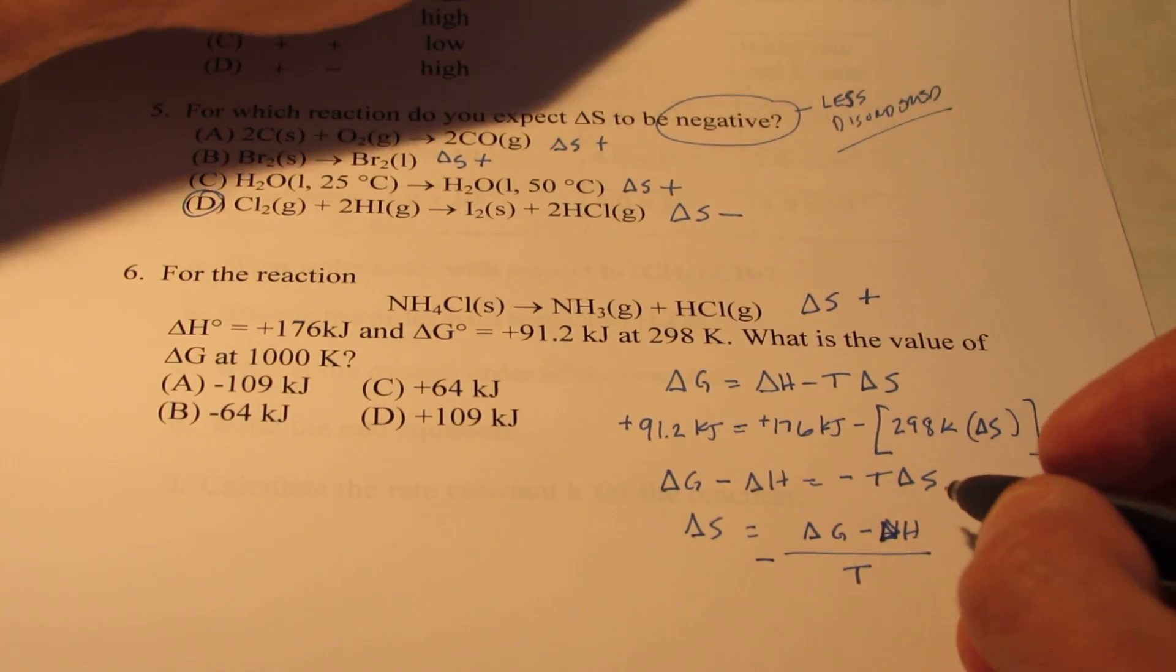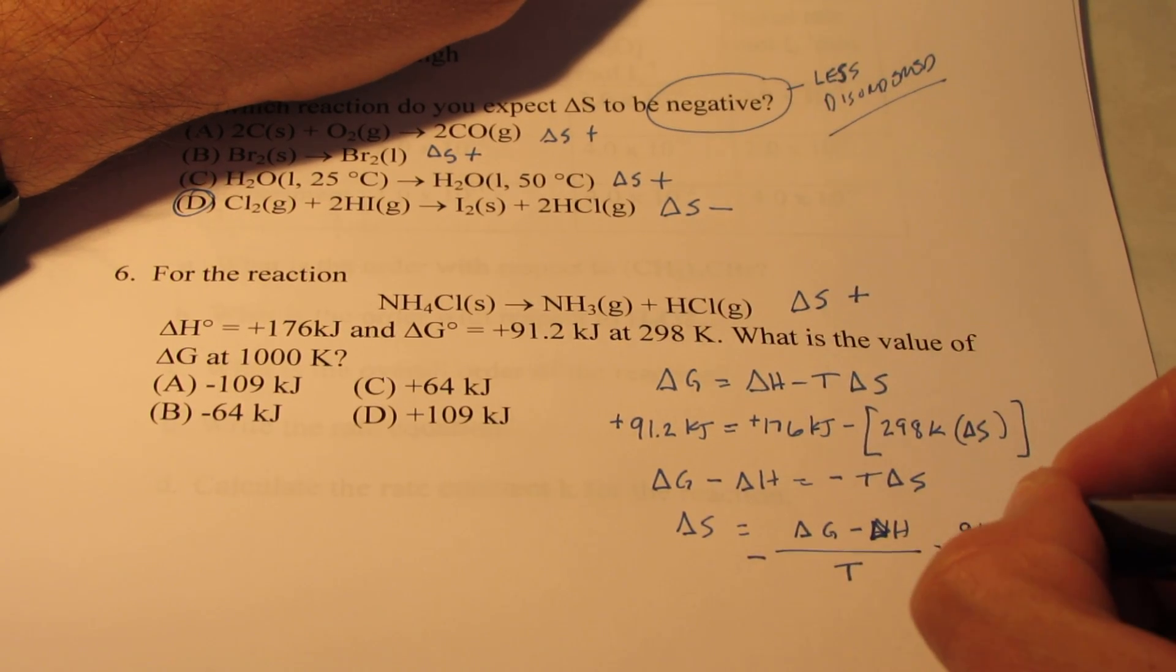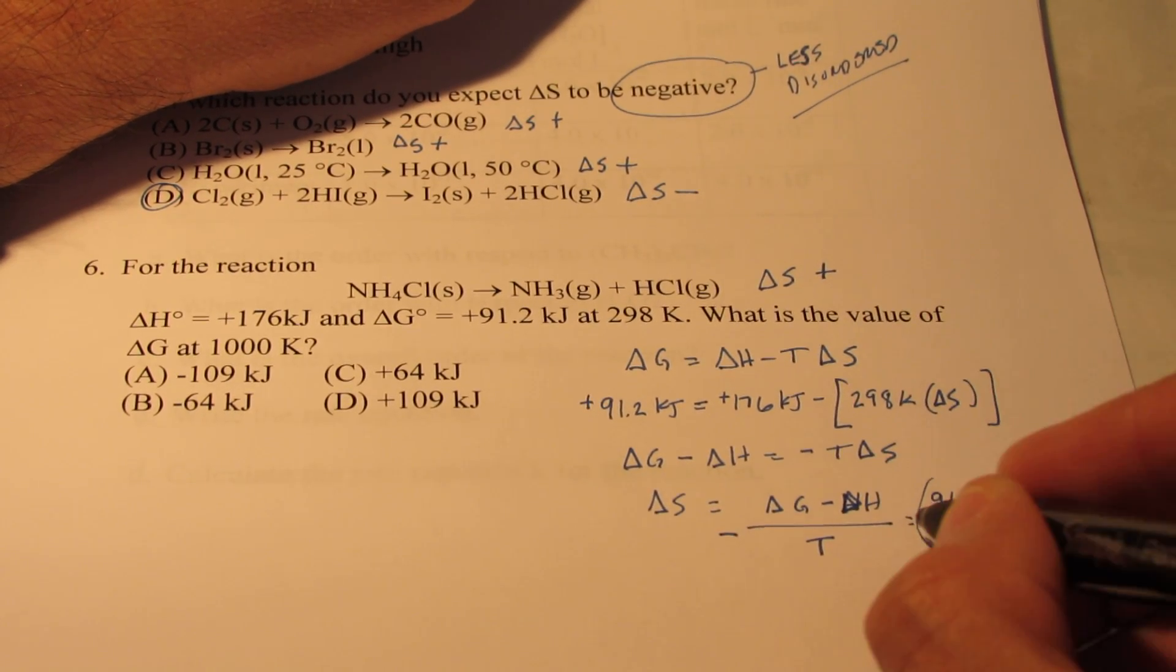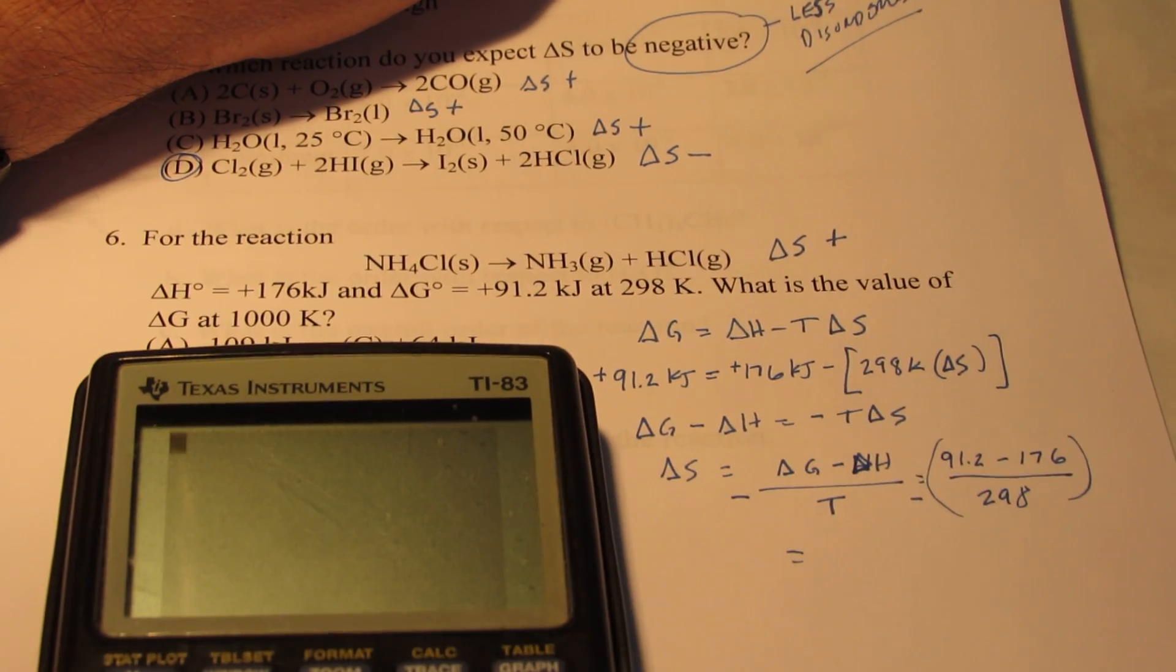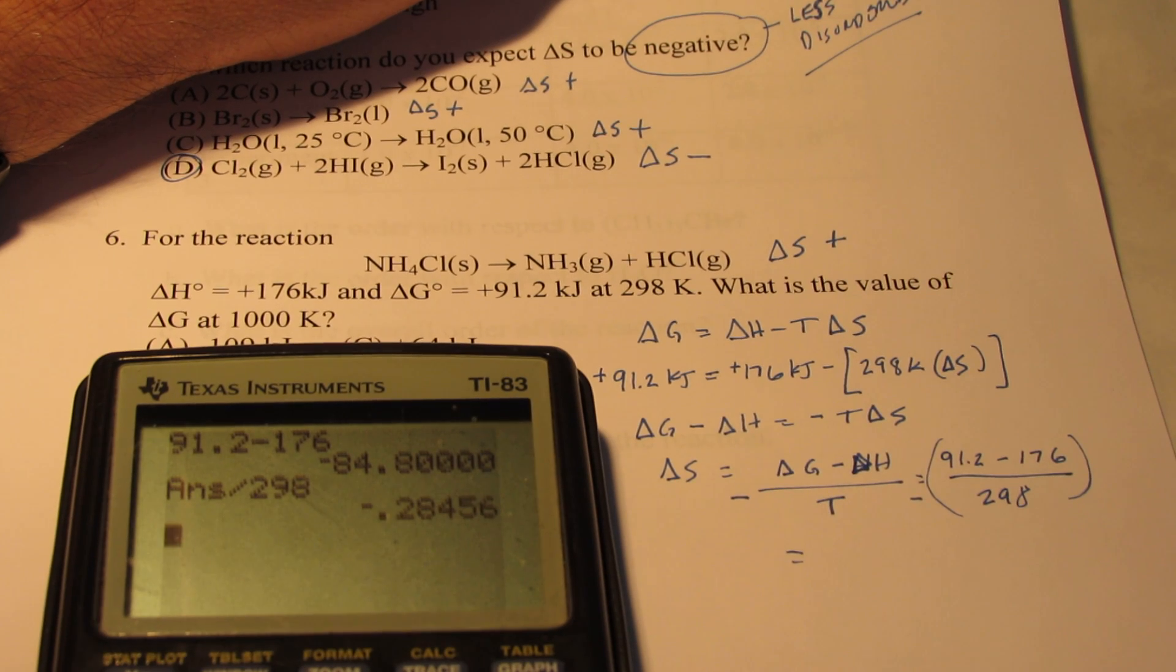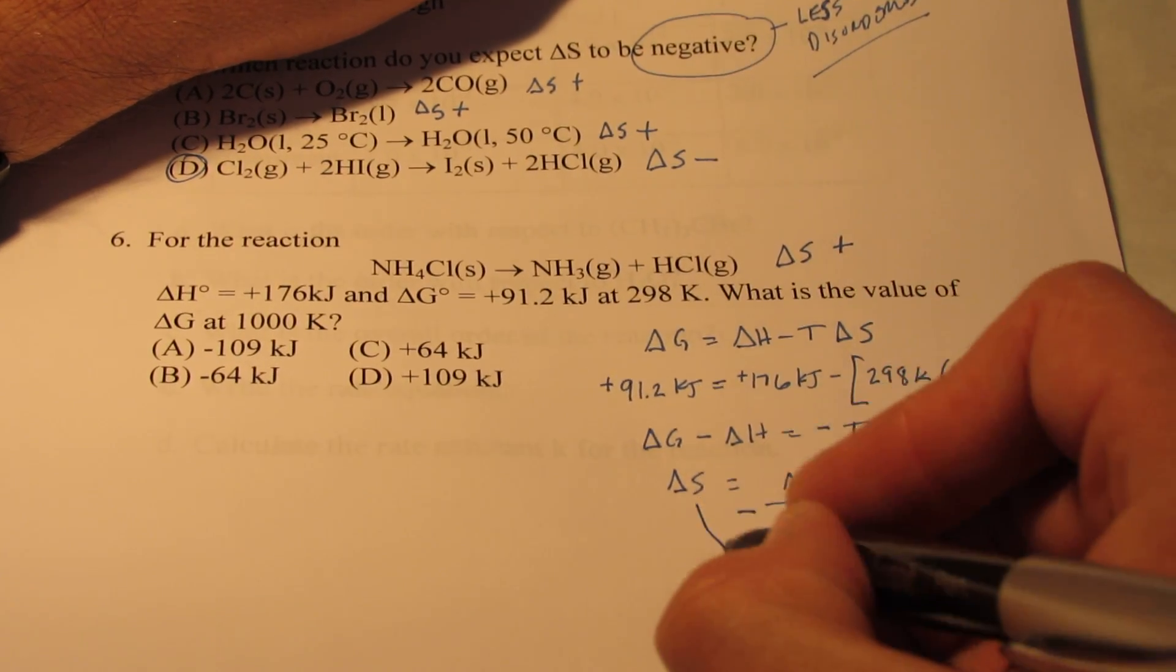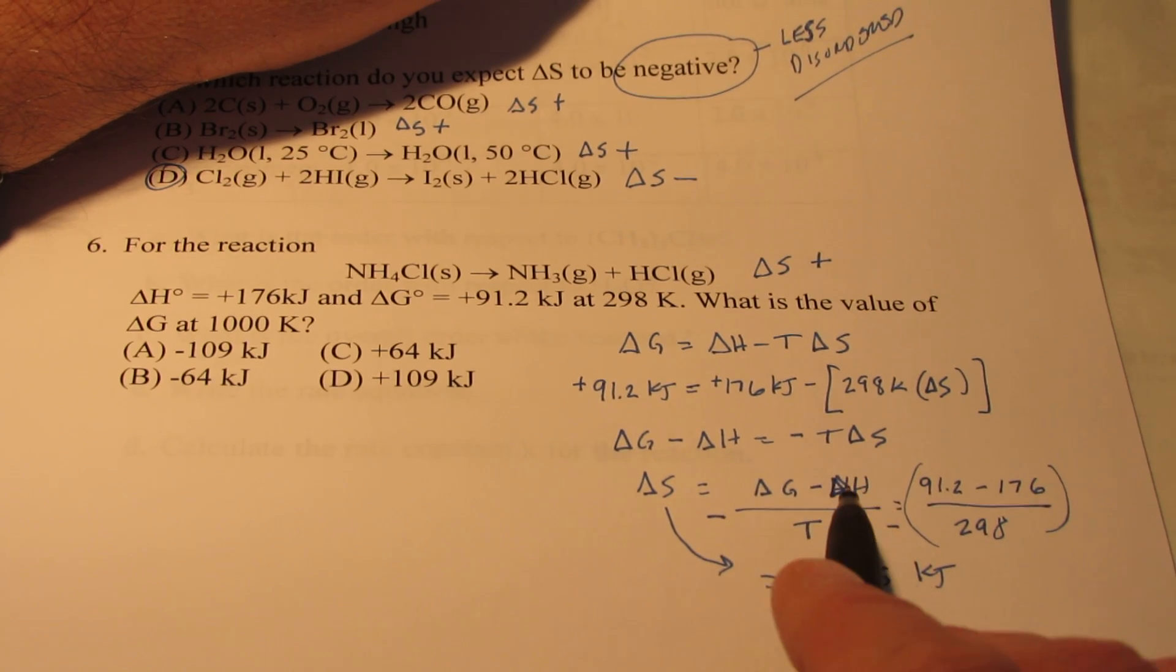So let's find out what the change in entropy is. Delta G is positive 91.2, Delta H positive 176. My temperature, 298. And we're going to take the negative of this. Let's clear everything out here. We have 91.2 minus 176. Then we'll divide that by 298. And the negative of that would be 0.285. And that would be in the unit kilojoules. So we know my Delta S for the reaction is 0.285. And the change in entropy is temperature independent. And so is the Delta H.